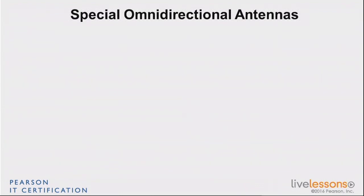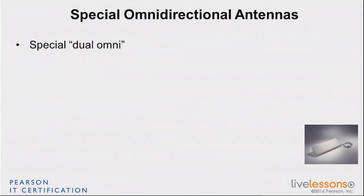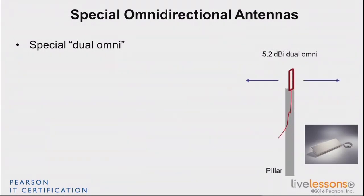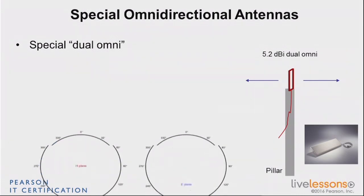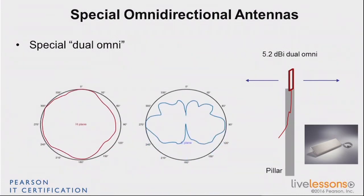There is one type you may want to be aware of — what we call the special dual omnidirectional antenna. That's an antenna that looks like this; it's a 5.2 dBi dual omni. It's typically placed on a pillar or at the top of a pillar and has this kind of radiation pattern. In fact, it's two directional antennas stuck to each other, and together they give a sort of omnidirectional spread that could be considered an omni.